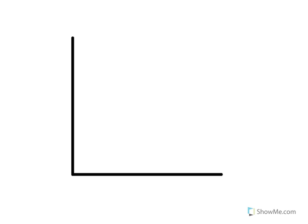If we were to draw the MRC curve, the labels on the axes are going to be just like they were in the markets — we have quantity of labor and the wage. And because MRC is always the same number, it's constant, no matter how many workers are going to be hired, marginal resource cost is going to be a horizontal line. And that is how you draw and model marginal resource cost.